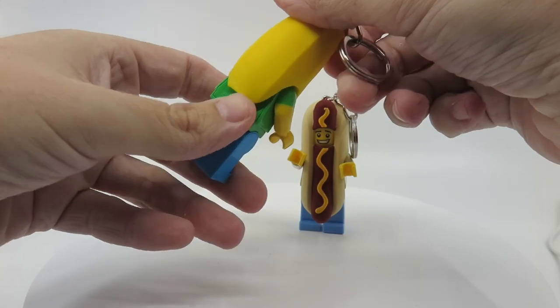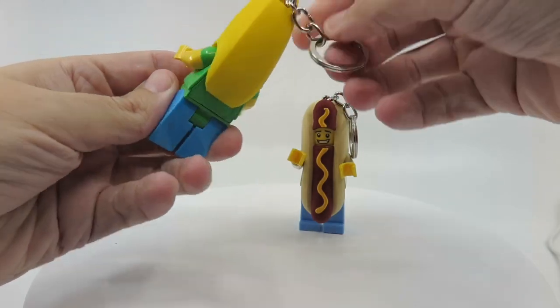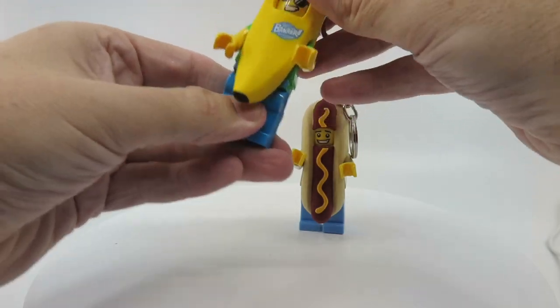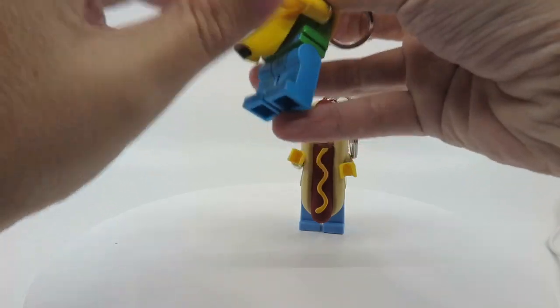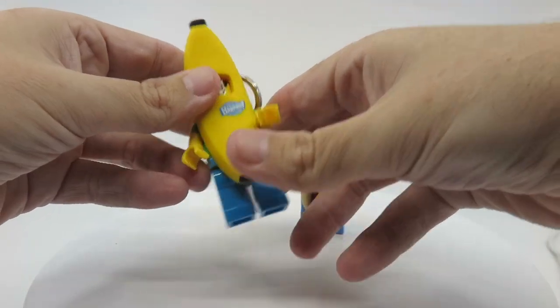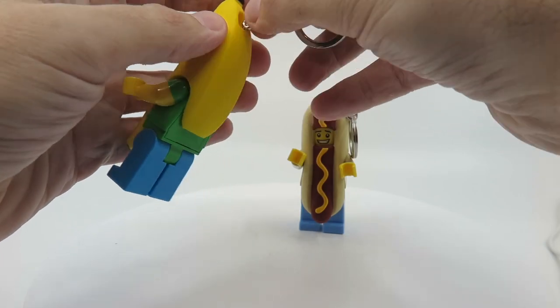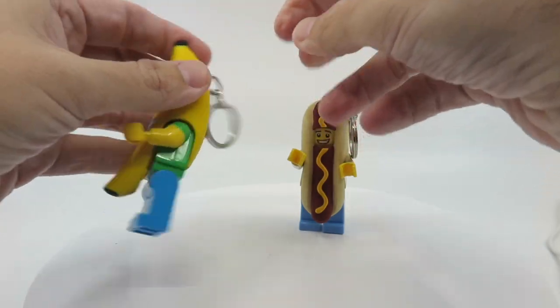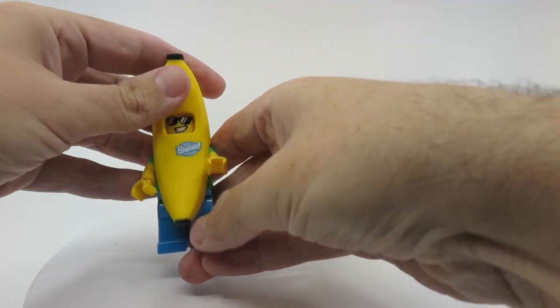Same again for the banana. Obviously not as far down on the back, but the front section is very rubbery. Otherwise it has all the standard sort of articulation of a minifigure. And just press on the middle of it.